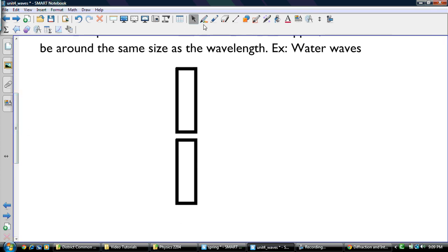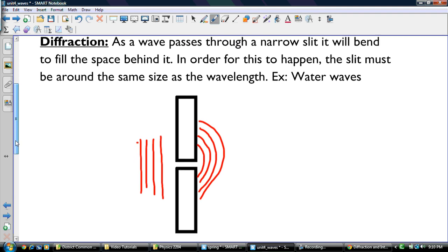An example of that might be water waves, but I'll show you what happens here. So if I have some light source here going like that, as the light source passes through here, what ends up happening is you get this bending of the light. It bends around here. So basically what ends up happening is the light just diffracts around the corner kind of thing.